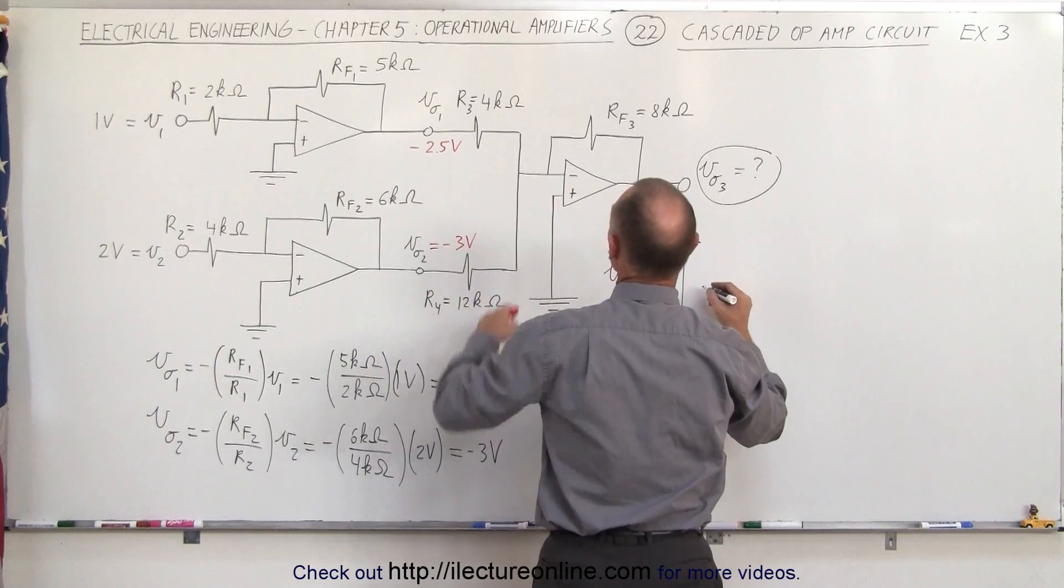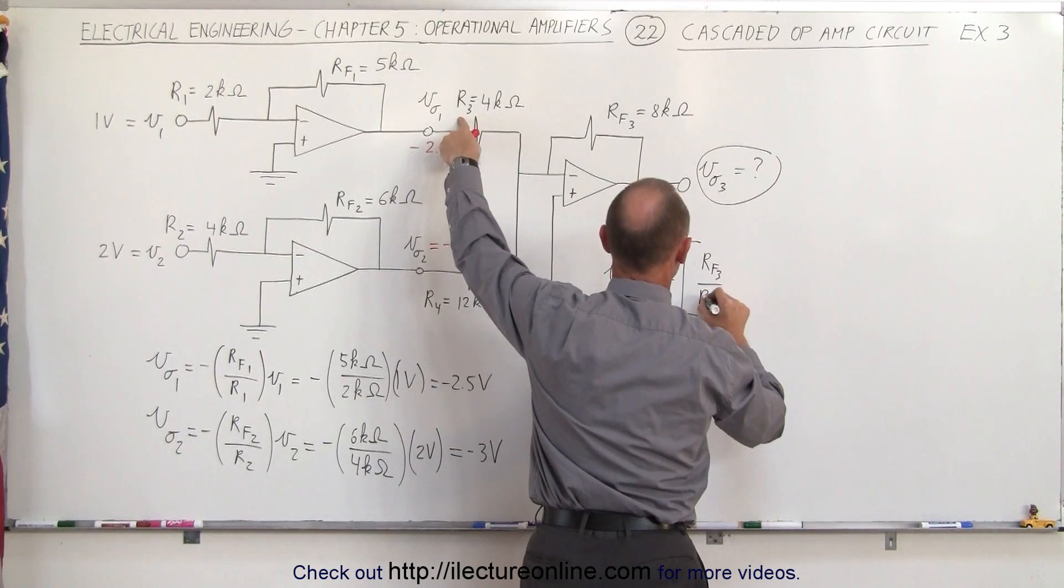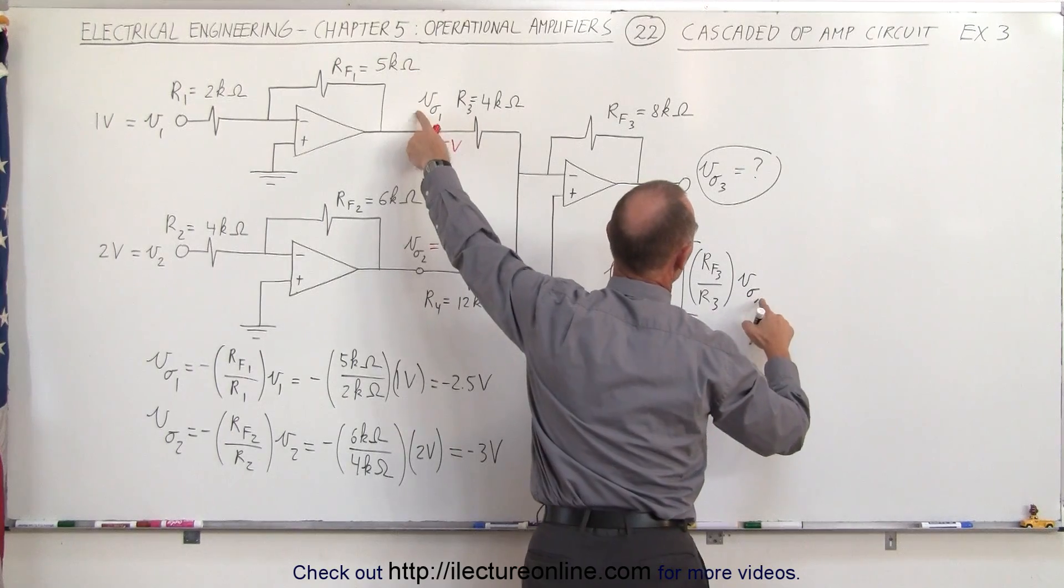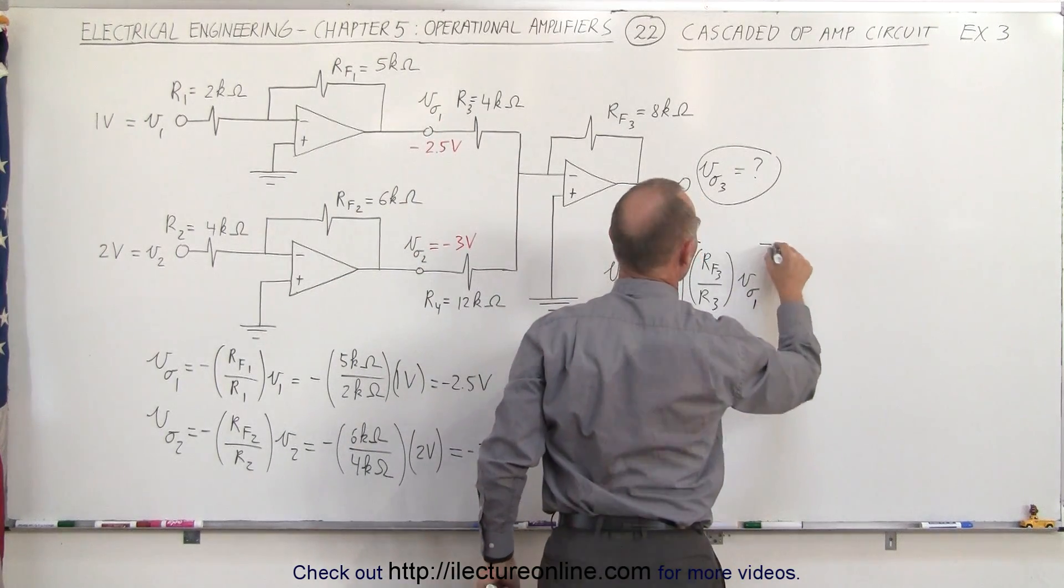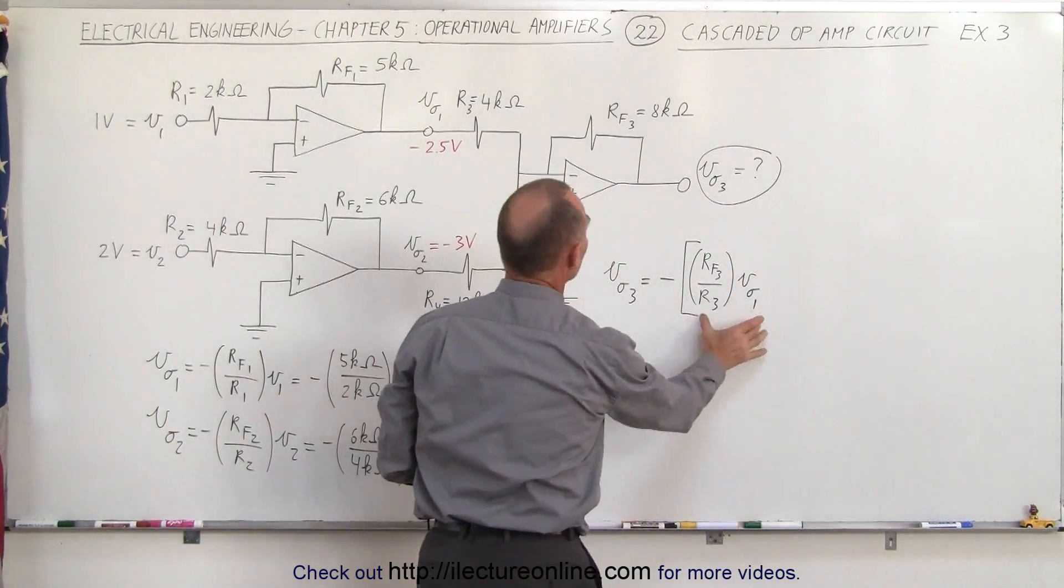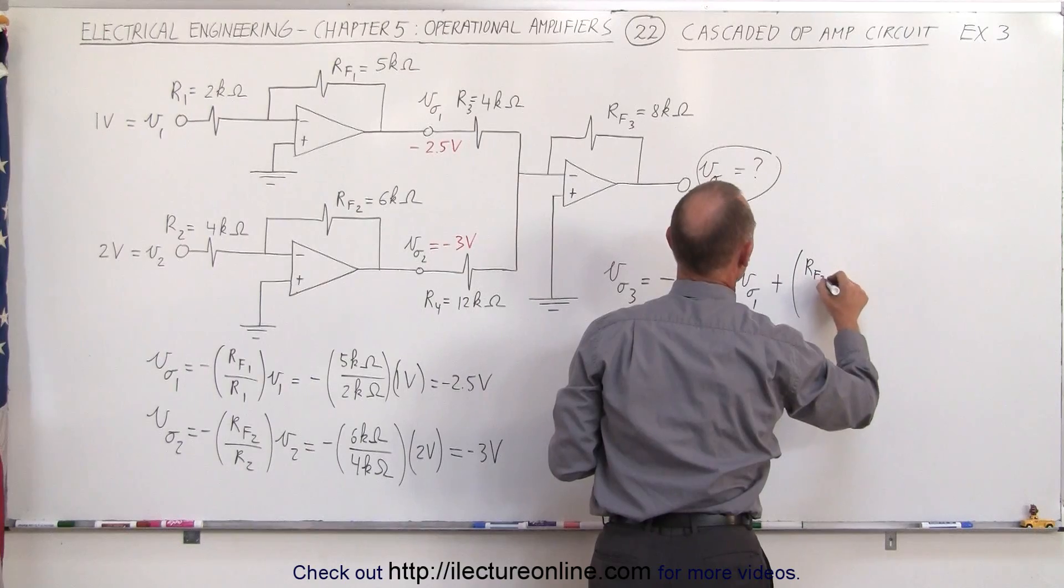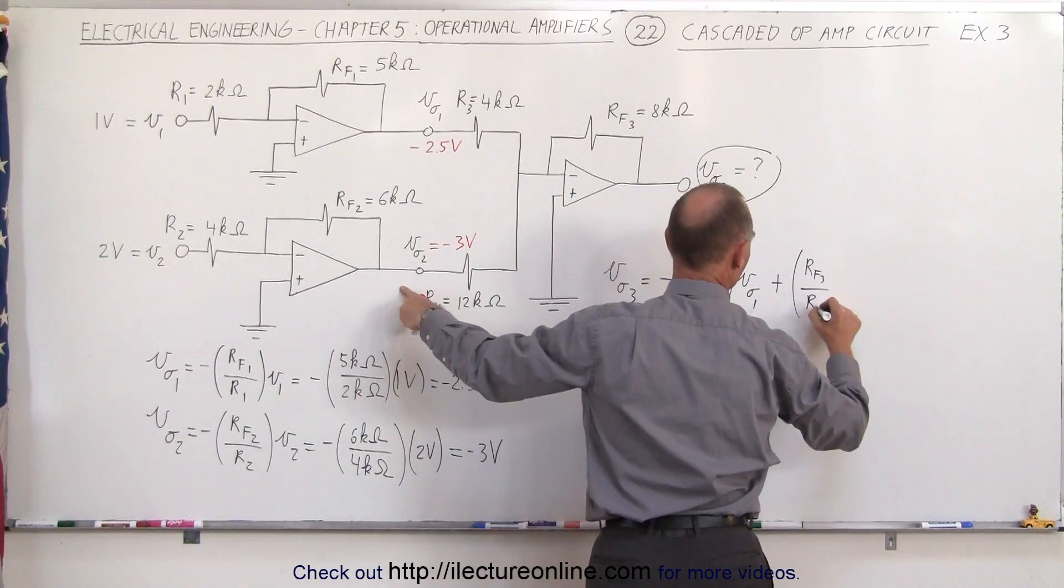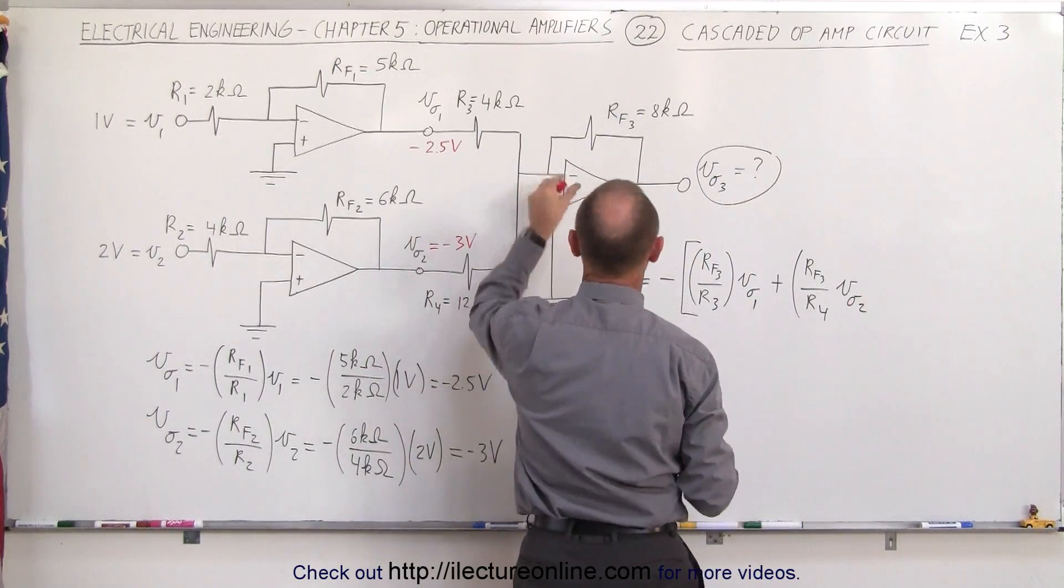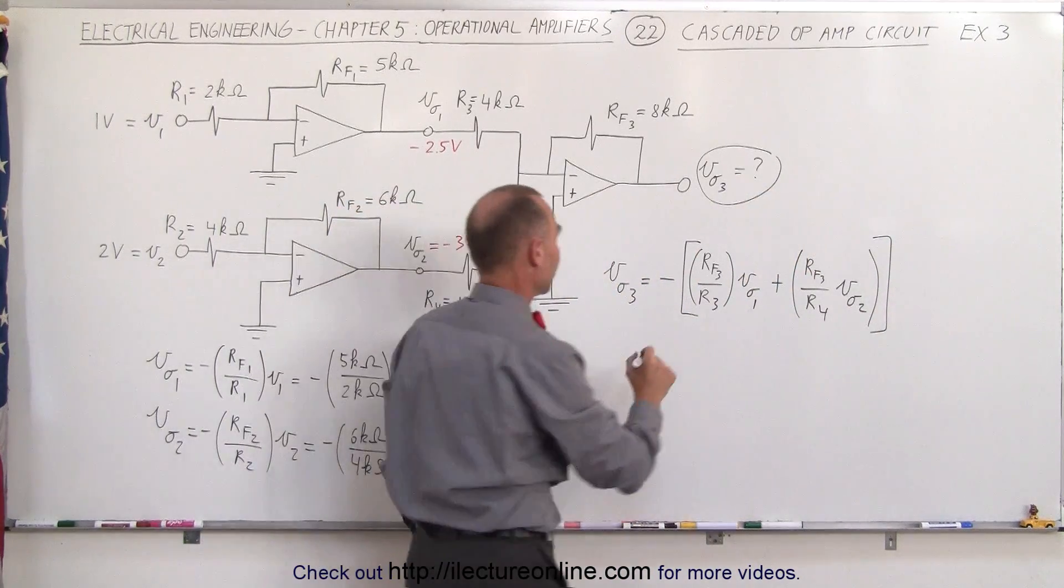The output V03 is equal to the negative of the ratio of Rf3 to R3 multiplied times V01, plus the ratio of Rf3 to R4 times V02, which becomes the input of the third circuit. Now we can close the bracket, so now let's plug in the values and see what we get.